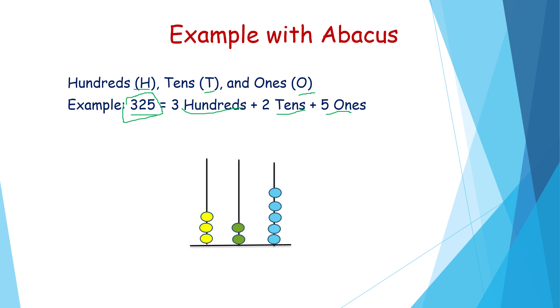We are taking three lines because it's a three digit abacus. In the hundreds place, how many beads should we draw? 3. Because in the hundreds place, the number is 3. Count: 1, 2, 3. Here is the 3.